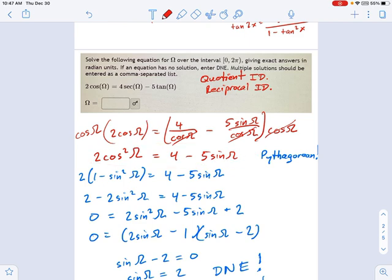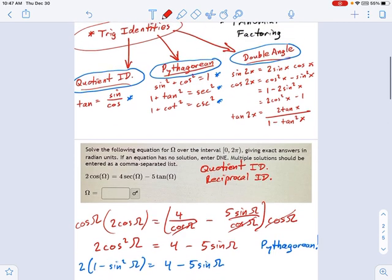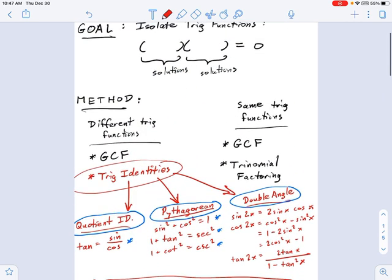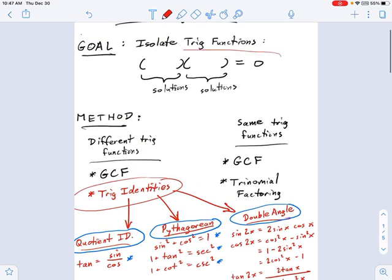So just play around with those identities. Remember, we're going to focus on generally these three. And as you work those together, you may be able to get yourself to this goal, factored form, and then you can solve your equation.